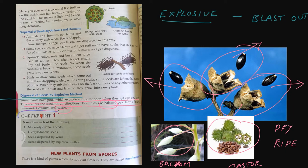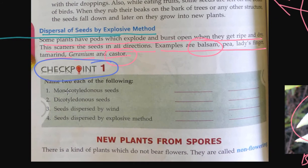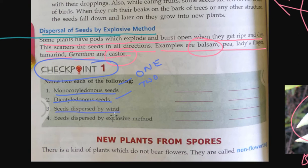Now let's look at some checkpoints from this chapter. Monocotyledonous seeds have one cotyledon, and dicotyledonous seeds have two. Seeds dispersed by wind — we discussed this in the previous video, go there for the answer. Seeds dispersed by the explosive method — we learned about this in today's class. Go through this video and try to answer these questions.